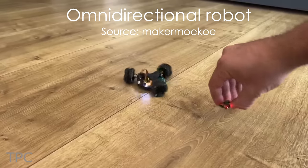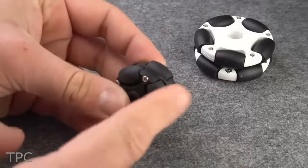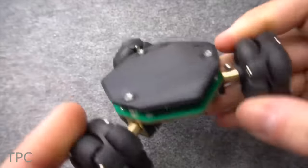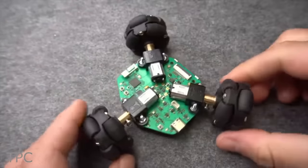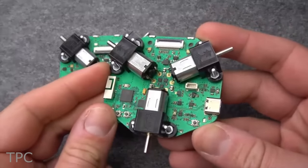Omnidirectional bots have the freedom to move in any direction, as their wheels have additional rollers beneath them. If we look at this project design, the wheels are spaced at an angle of 120 degrees, where a PCB at the center houses all the electronics.